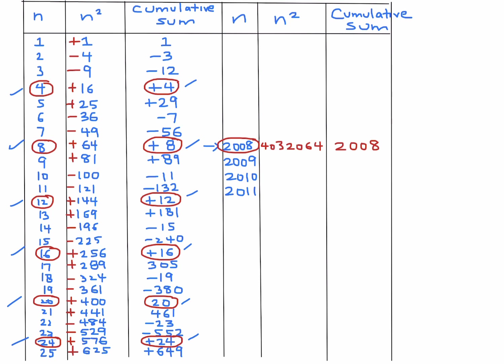We calculate: 2009 squared is 4,036,081; 2010 squared is 4,040,100; and 2011 squared is 4,044,121. Now determine the signs for these last four terms. Since every group of four starting from a multiple of 4 follows the pattern plus, plus, negative, negative, the terms at positions 2009 and 2010 are positive and the terms at 2011 and 2012 would be negative. So 2009 and 2010 are positive, 2011 is negative.